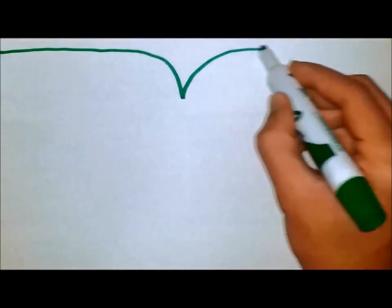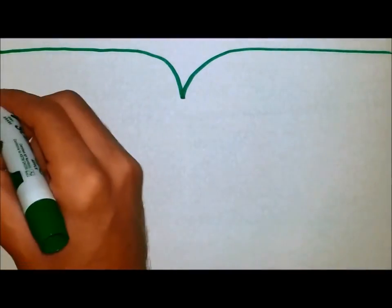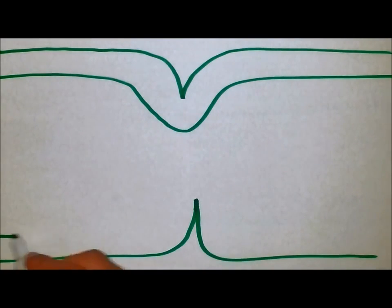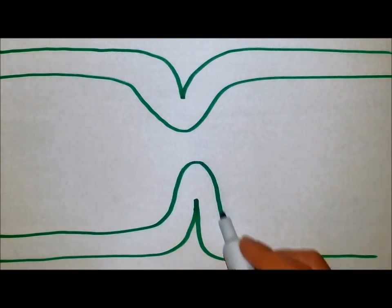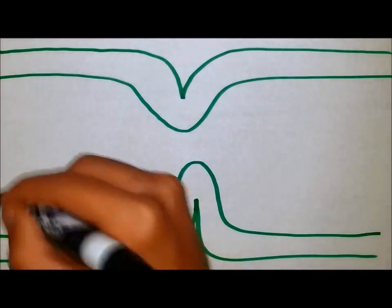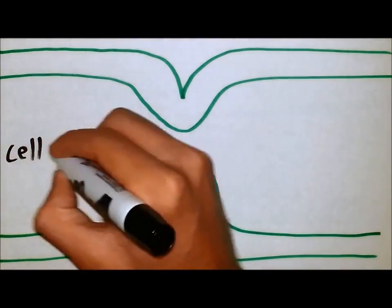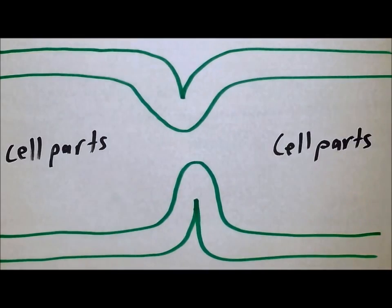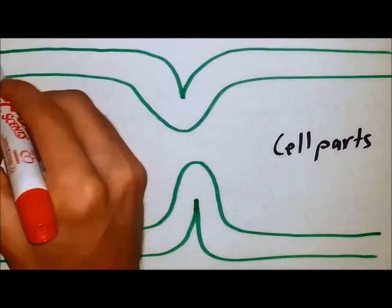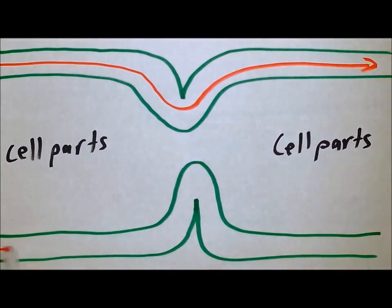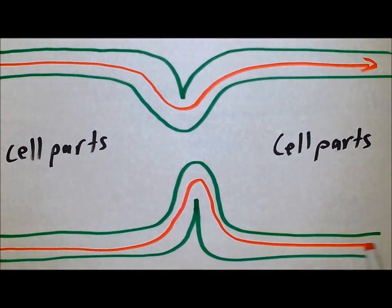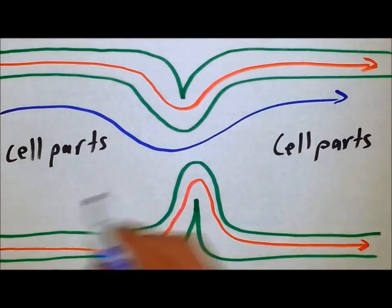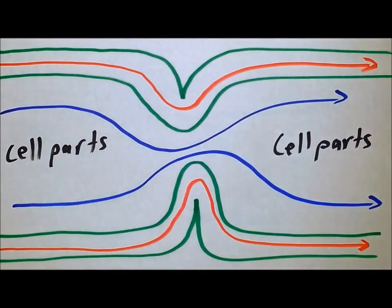The plant cells will also form what is called Plasmodesmata during cell replication, which performs the action of transporting nutrients, proteins, mRNA, RNAi, and viral genomes from cell to cell. The two pathways of the Plasmodesmata are the apoplastic pathway that travels through the cell wall and the symplastic pathway that travels through the cytoplasm.